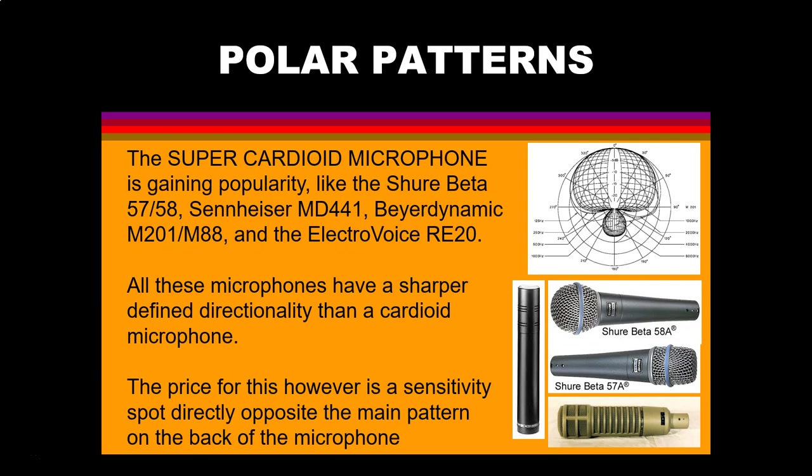The supercardioid microphone is gaining popularity. Models include the Shure Beta 57 and 58 series, Sennheiser MD441, Beyerdynamic M201 or M88, and the ElectroVoice RE20. These microphones have a sharper defined directionality than a cardioid, but the price is a sensitivity directly opposite the main pattern on the back of the microphone. These microphones are commonly used in broadcast and vocals.